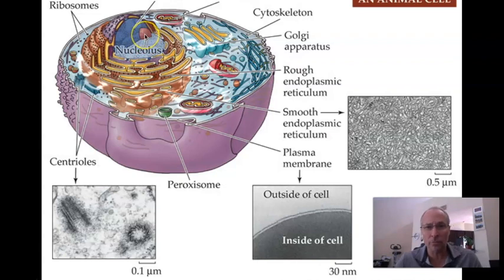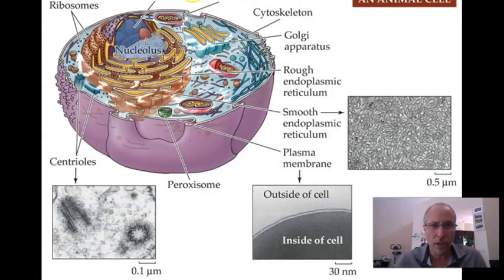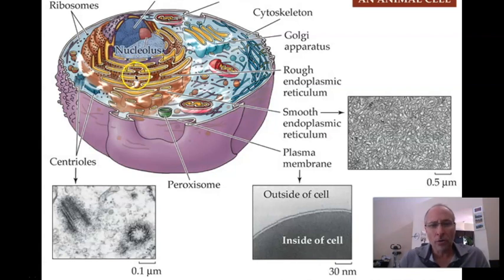What the nucleolus does is package up the ribosomal parts. It produces the ribosomal parts, which then go out into the cytosol and are constructed into ribosomes, as you remember from unit one. The rough ER and the smooth ER are places where proteins are synthesized in the rough ER, or processed in both the rough ER and the smooth ER. Those proteins get packaged up and released in little vesicles.